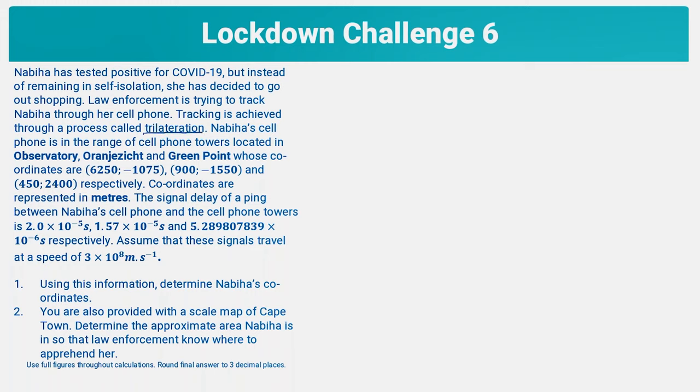Trilateration is a process which GPS satellites use to track phones. It's different from triangulation. Triangulation is something that quantity surveyors use, and that involves the use of both lengths and angles, whereas trilateration only involves the use of lengths. You'll see what that means as we go on when we solve this question.